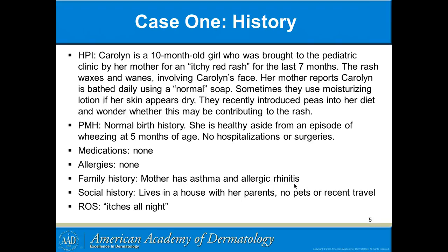This is the important bit of family history: the mother has asthma and allergic rhinitis. If both parents have manifestations of atopy — meaning asthma, eczema, and hay fever — you can rest assured the child is going to get problems. They live in a house with parents, no pets, which is important — cats and horses are a particular source of allergens in children with atopic dermatitis. She itches all night, which is really a problem: when they're itching they're not sleeping, and that usually means the parents aren't sleeping either.